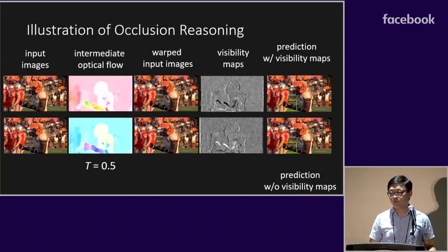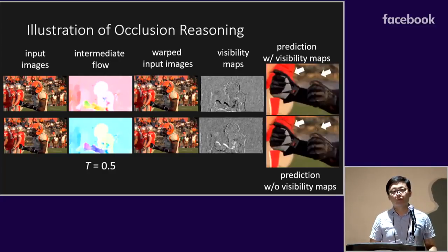We can see in this example, visibility maps help generate better interpolation results. Especially around motion boundaries, the athlete's arms, there are less artifacts by using visibility maps.